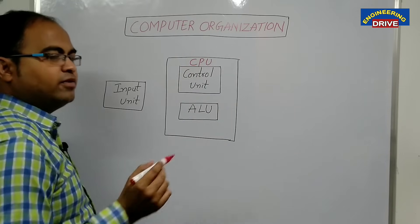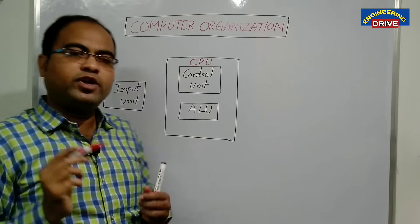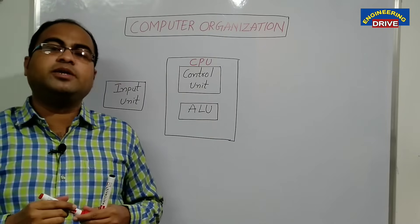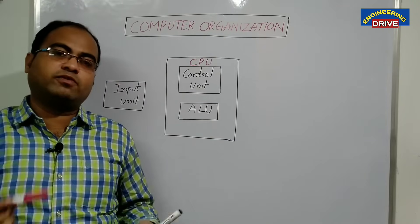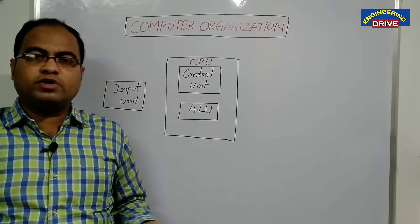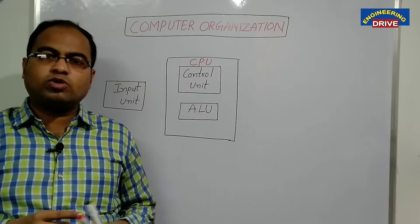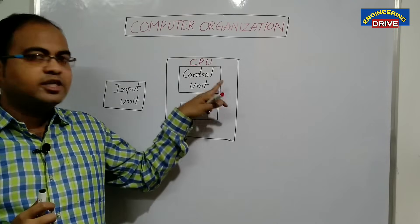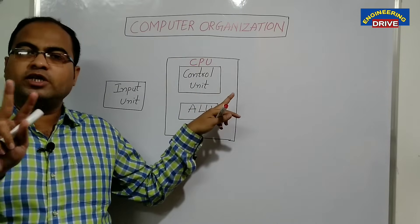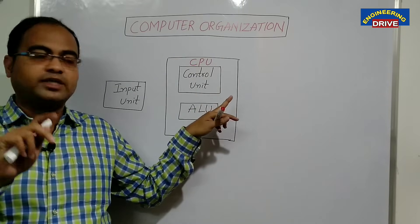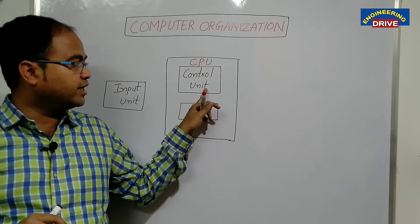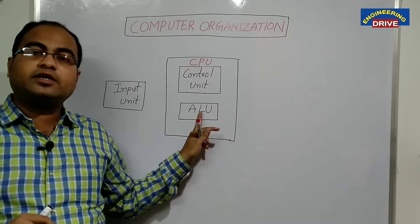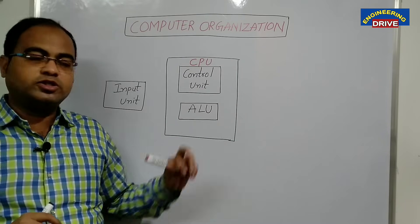Generally, in every computer, the CPU is known as the brain of the computer. Without the CPU, there is no computer at all. What is CPU? It is a combination of two major things: one is the control unit, and another one is the arithmetic and logic unit.